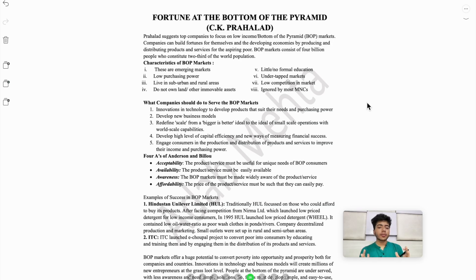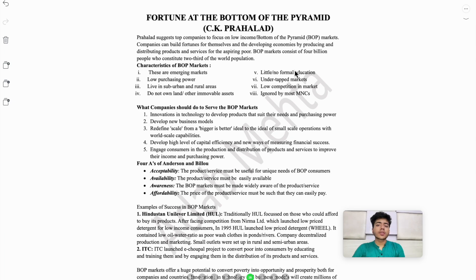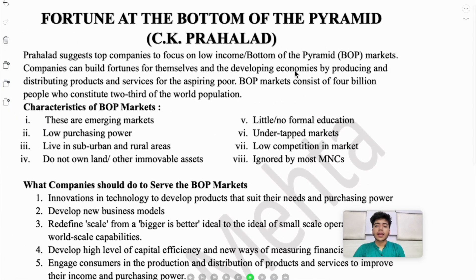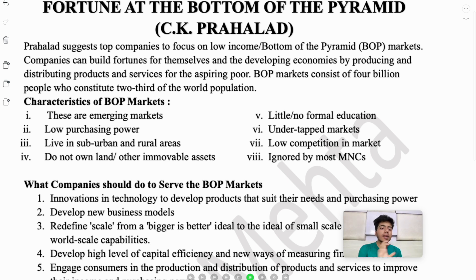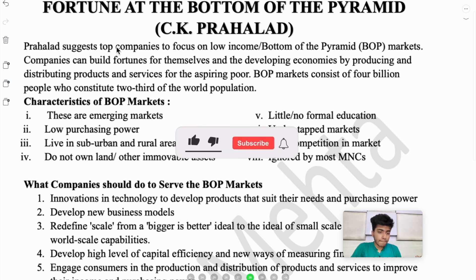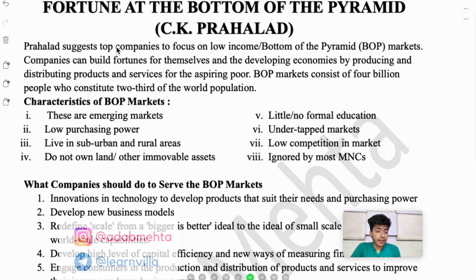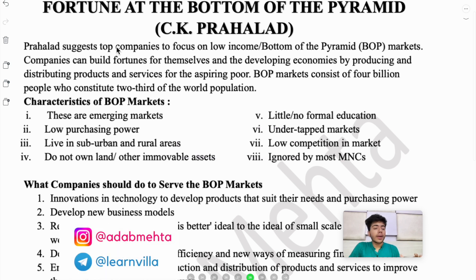The next theory we are going to cover is 'Fortune at the Bottom of the Pyramid,' given by C.K. Prahalad. In this theory, C.K. Prahalad basically suggested that big companies that have a lot of capital and backing should focus on low income groups — those customers whose income is low.